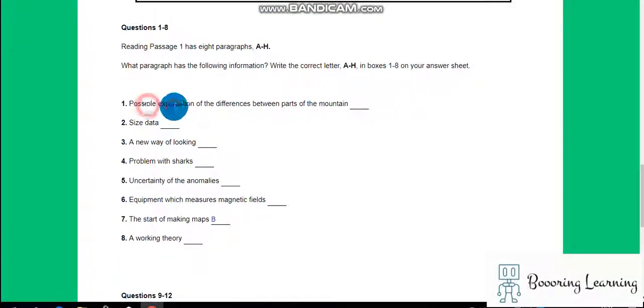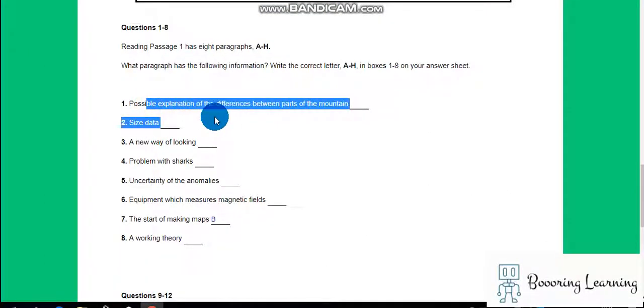Okay, read those again. Possible explanation of the differences between parts of the mountain, size data, a new way of looking, problem with sharks, uncertainty of the anomalies, equipment which measures magnetic fields, a working theory.